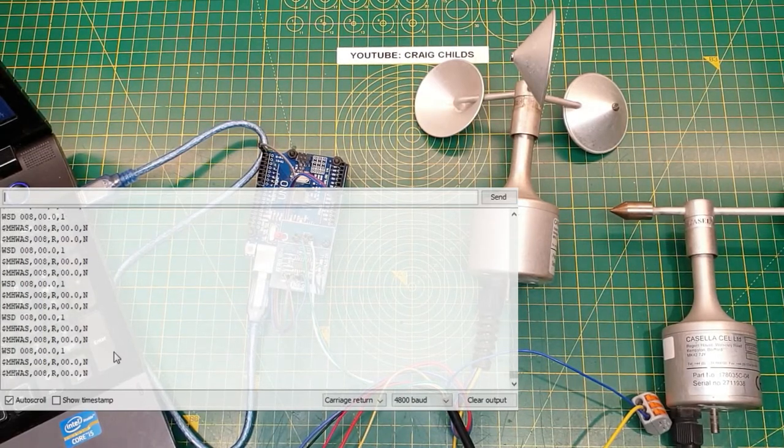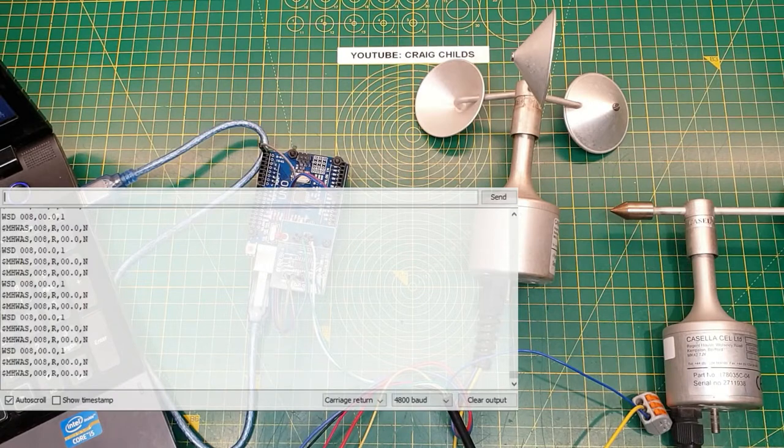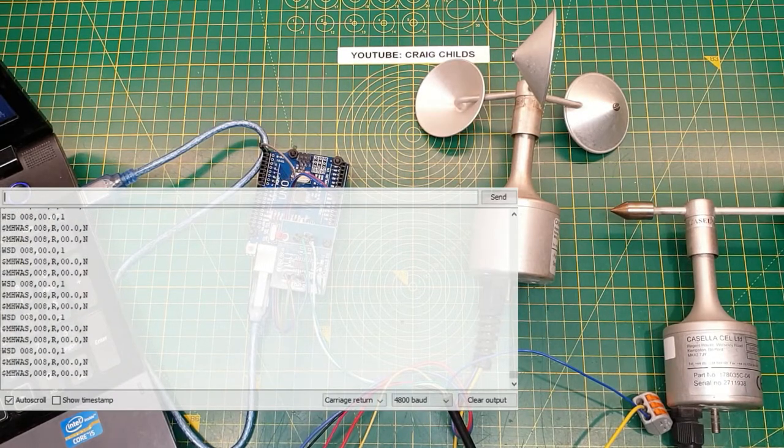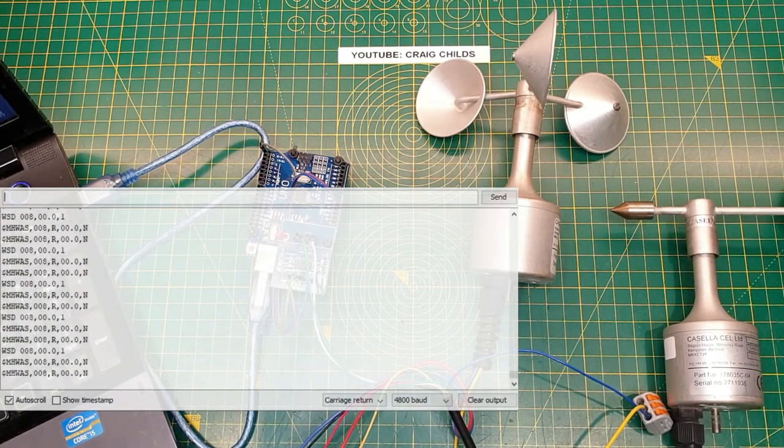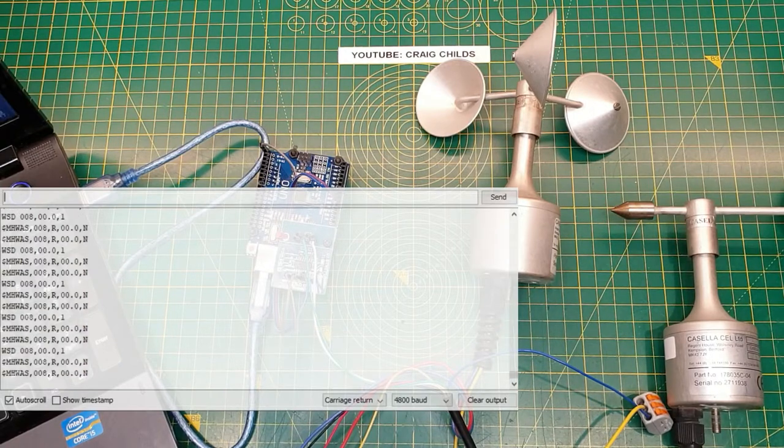But for us we want to be able to read it. So what I'm going to do is I'm going to change the code. I'm going to make the code a little bit more complicated and see if we can pull out the relevant figures and see if we can make it make sense to us.